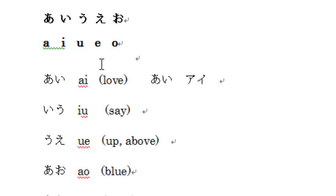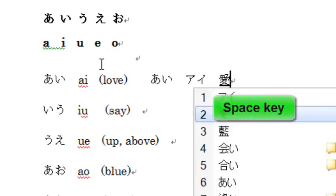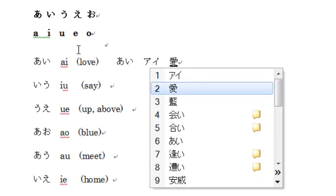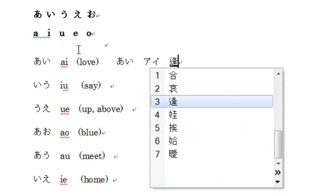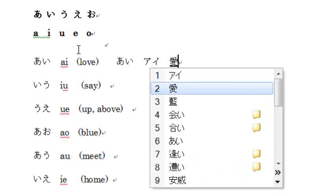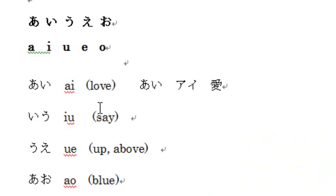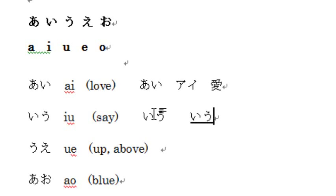Or if you want to type kanji — 'ai' for love — press the space key. You'll see options for 'ai' in kanji. There are a lot of options, and love is number 2. Next is 'iu' (いう), which means 'to say' in English. You type 'i' and 'u'. Confirm with Enter. If you want to type 'iu' in kanji, type 'iu' then press the space key and select the correct one.